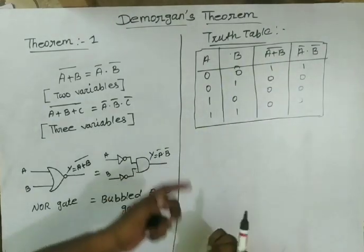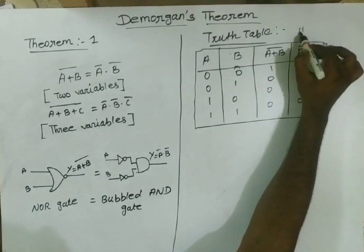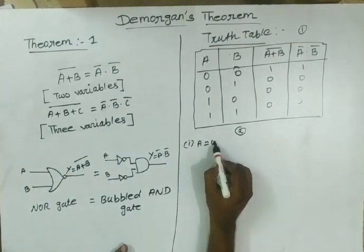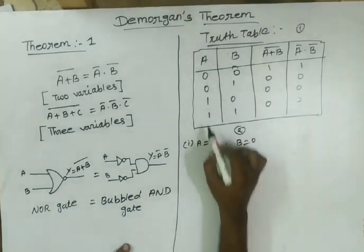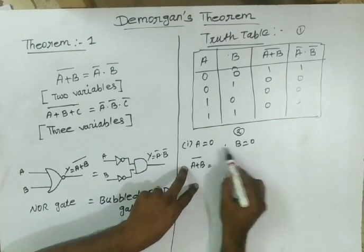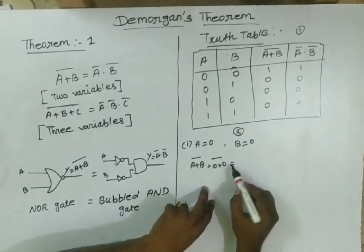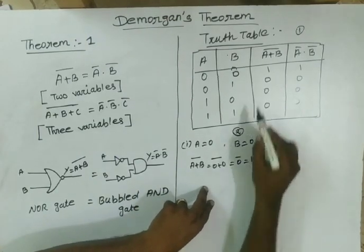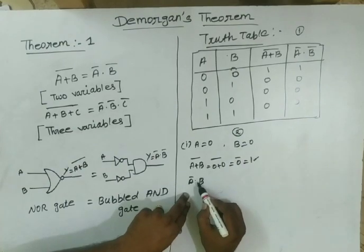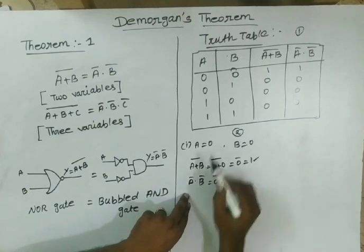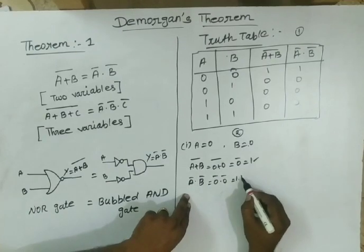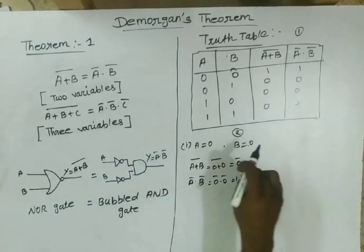This is Method 1. Next is Method 2. Let us verify. First case: A=0, B=0. A plus B whole bar = 0 plus 0 whole bar = 0 bar = 1. Right hand side: A bar dot B bar = 0 bar dot 0 bar = 1 into 1 = 1. Left hand side 1, right hand side 1 — first case verified.